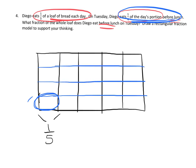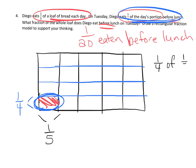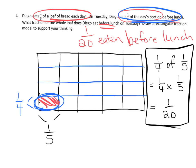He eats a quarter of his fifth before lunch. That shows us the whole is cut into twenty equal parts, and our answer is one out of twenty — so one-twentieth is eaten before lunch. If we want to make that look mathematical: one-fourth of one-fifth equals one-fourth times one-fifth, which gives us one-twentieth.